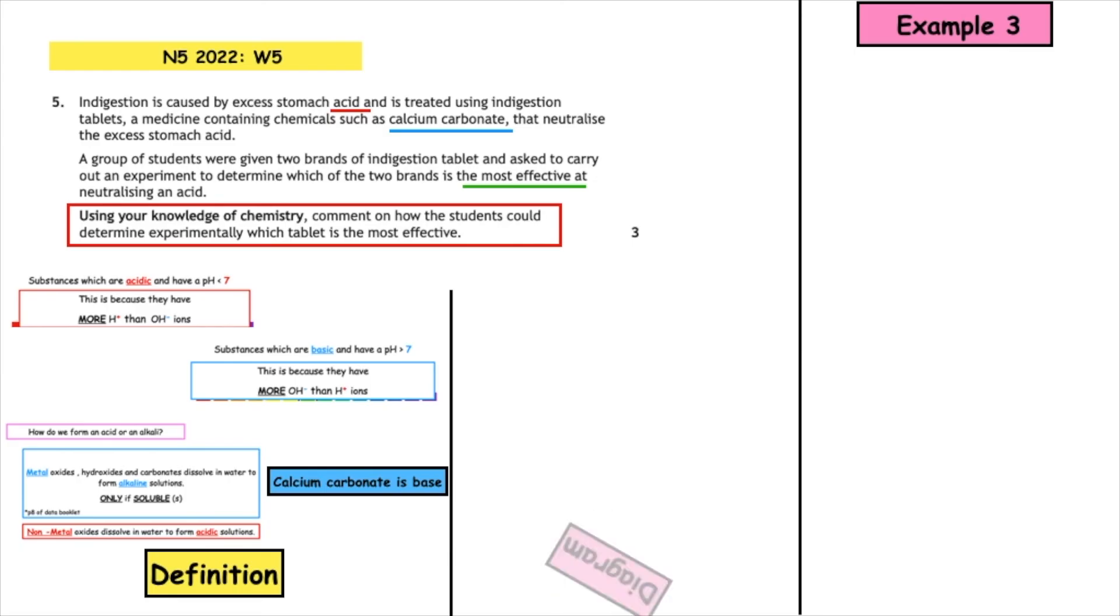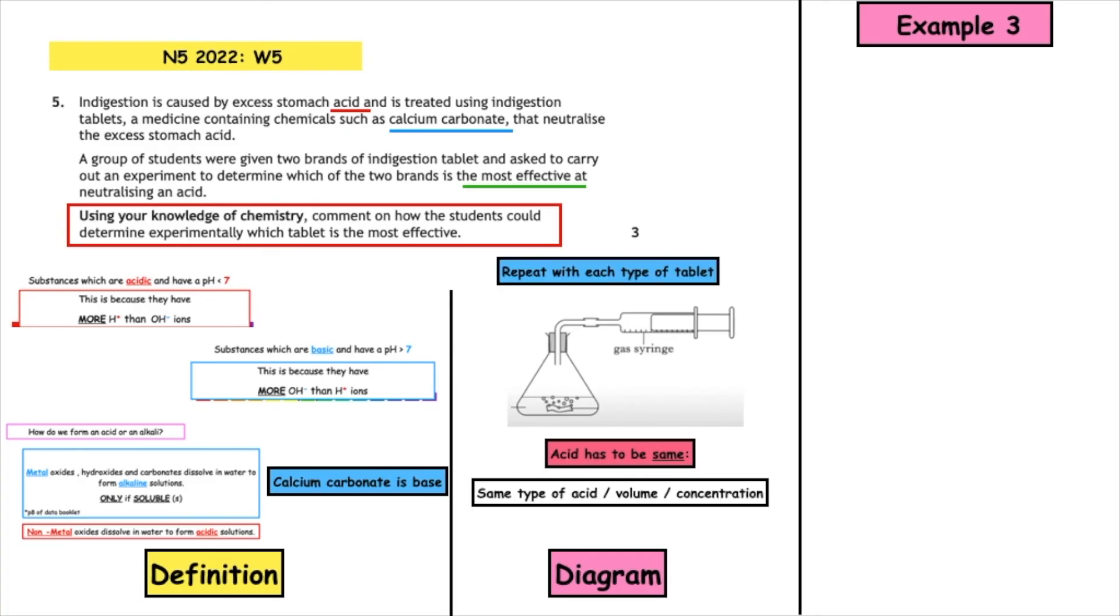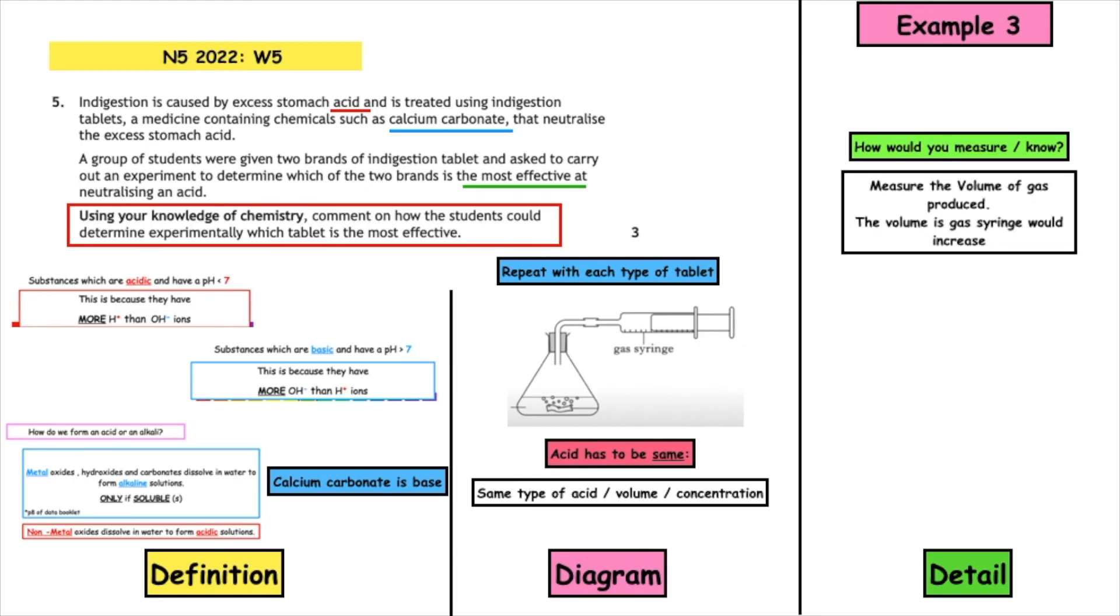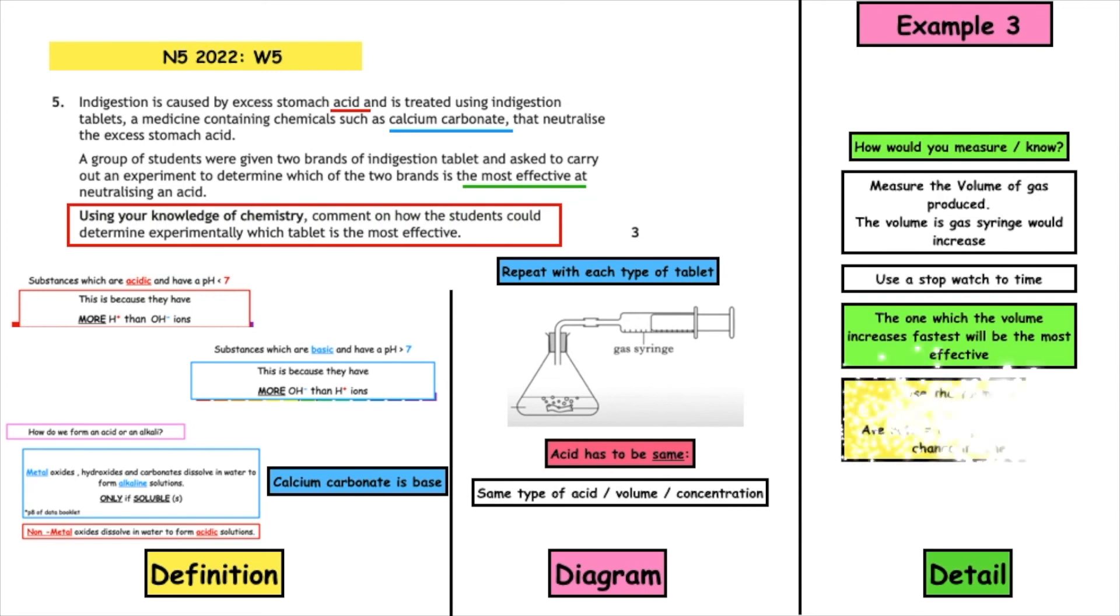Again you could do the labeled diagram of the gas syringe and show that the carbon dioxide gas would be collected in the gas syringe, and telling us the things that have to remain the same in our experiment. And how would you measure it? No, you could measure the volume of gas being produced. The volume of gas in the syringe would increase, you could use a stopwatch to measure the time, and the one which the volume increases the fastest would be the most effective.